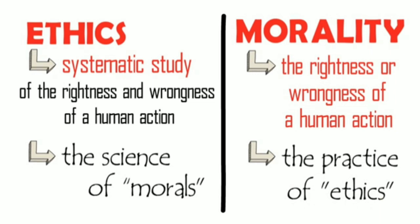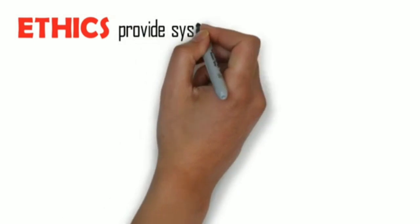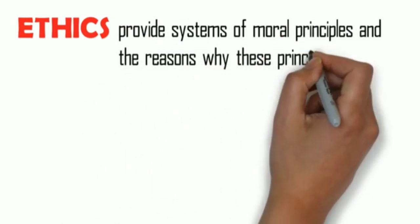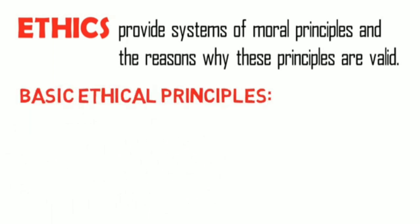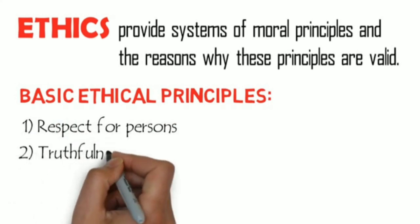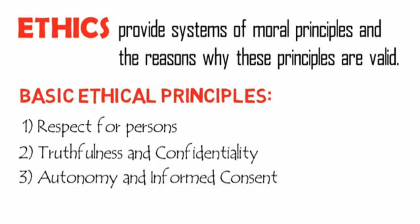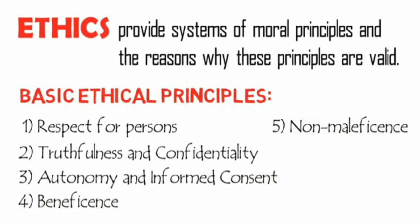Based on this, we can draw the idea that ethics attempts to provide systems of moral principles and the reasons why these principles are valid. Hence, ethics is more concerned with the theories that explain why a particular moral principle is valid or not, right or wrong. It is for this reason that ethicists have come up with basic ethical principles to help determine the rightness or wrongness of a human action. Some of these basic ethical principles are: Respect for persons, Truthfulness and confidentiality, Autonomy and informed consent, Beneficence, Non-maleficence, and Justice.